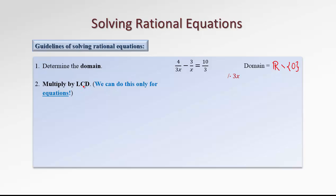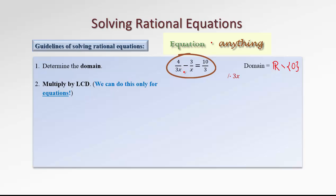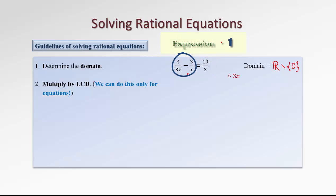Remember, we can employ this method only when we deal with equations, never expressions. Because in the case of an equation, we change both sides in the same way, so we end up with an equivalent equation. However, if we deal with just a single expression and multiply it by anything, it will have to be 1, nothing else. Because in the case of an expression, we can't change its value.